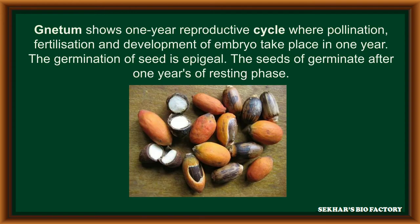Gnetum shows a one-year reproductive cycle, where pollination, fertilization and development of embryo takes place in one year. After fertilization, seed formation takes place, and the seeds germinate — this is called epigeal germination. The seeds germinate after one year of resting phase. This is the main character of Gnetum.